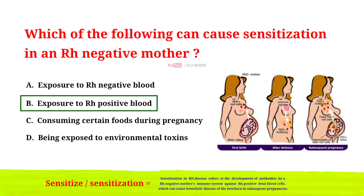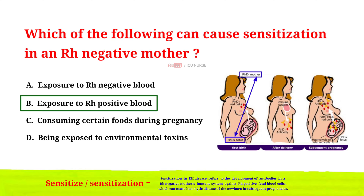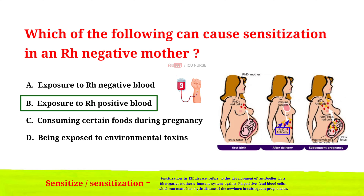Sensitization in Rh disease refers to the process by which a mother's immune system produces antibodies against the Rh factor protein on the surface of her fetus's RBCs. This can occur when a mother who is Rh negative is exposed to Rh positive blood cells, either through a blood transfusion or during pregnancy if she carries an Rh positive fetus. During pregnancy, small amounts of the baby's blood can enter the mother's bloodstream. If the baby is Rh positive, the mother's immune system may recognize the Rh factor protein on the baby's RBCs as foreign and produce antibodies against it. This process is called sensitization.